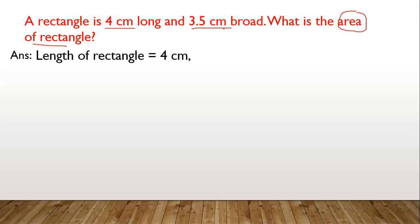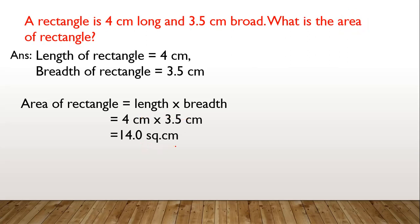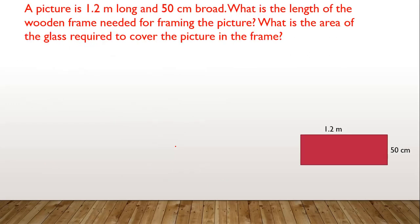Length of the rectangle is 4 centimeter and breadth is 3.5 centimeter. Area of a rectangle equals length into breadth, so 4 into 3.5 gives a product of 14.0 square centimeter. Hence the area of the rectangle is 14 square centimeter.